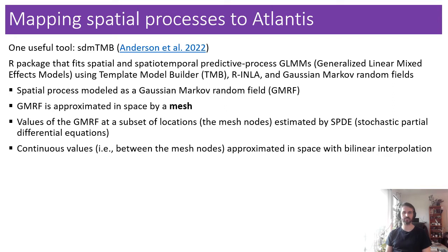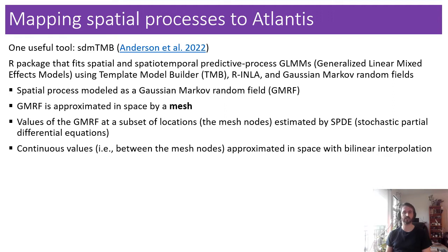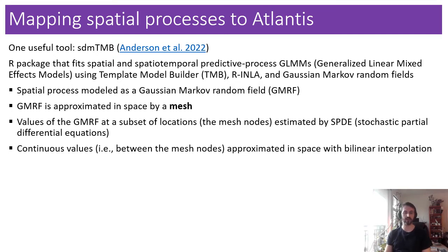In a nutshell, you have a spatial process — say, fish abundance in your georeferenced data — and the package models this spatial process as a Gaussian Markov random field. This process is approximated in space by a mesh. The package estimates the value of the random field at the nodes of this mesh using stochastic partial differential equations. Once you've estimated values at the mesh nodes, linear interpolation lets you re-predict values over a continuous spatial field, which then becomes useful to map things back to the Atlantis geometry.